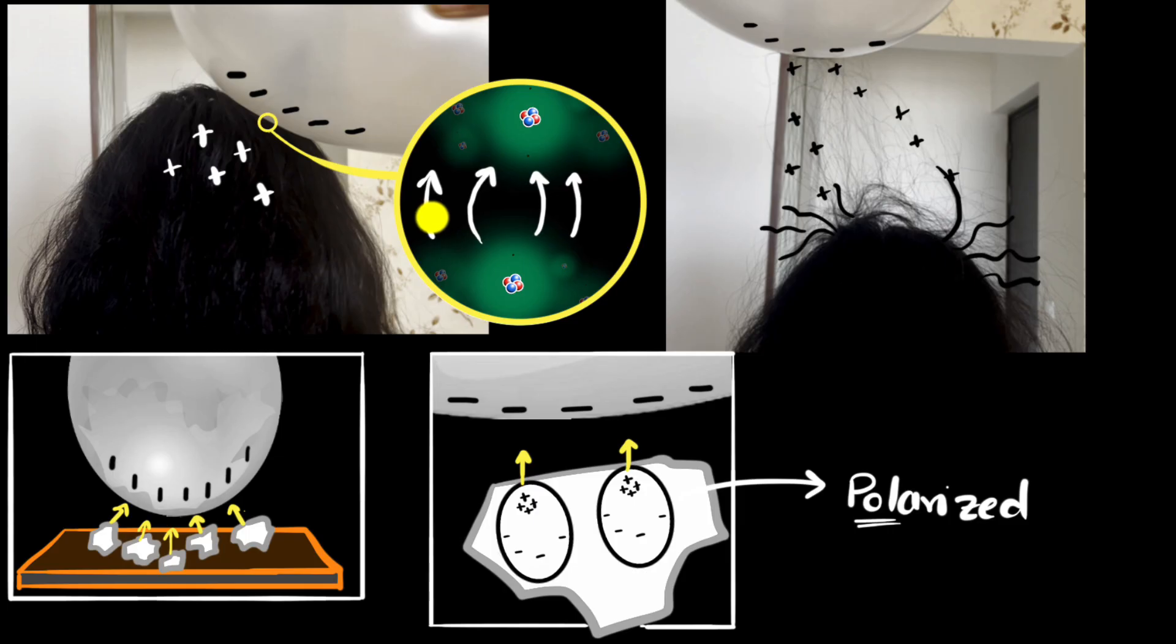Well, one last question we could be having is, why doesn't static electricity last very long? Right? I mean, you can have fun for some time, but then it'll very quickly go away. And the reason for that is whatever electrons you lost or gained, well, eventually you will lose it back or you will gain it back. Because remember, there is so much stuff around us, there's so much air, there's water vapor all around us. So it's very easy to get back our electrons or lose the extra electrons that we have.